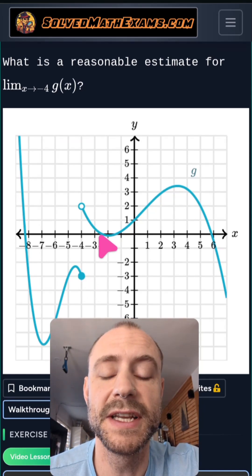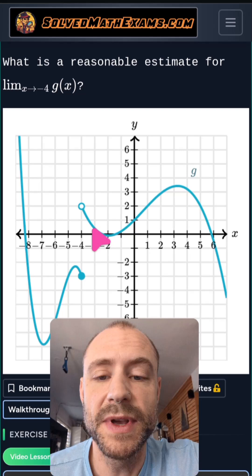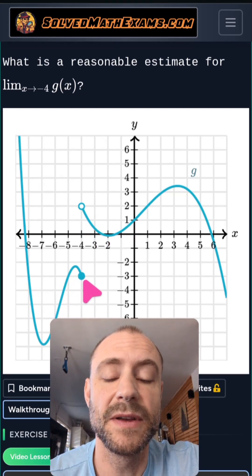Okay, so continuing on. Now that we know the right hand limit is not equal to the left hand limit, we actually conclude that this limit does not exist.